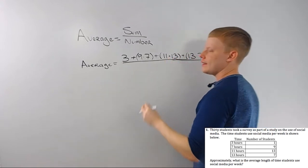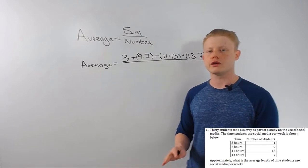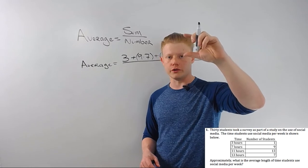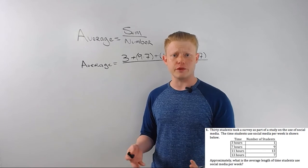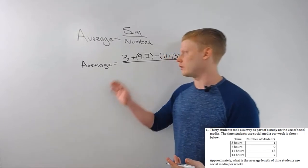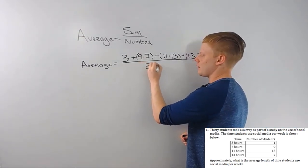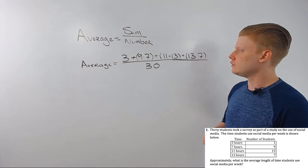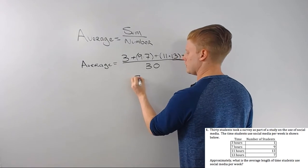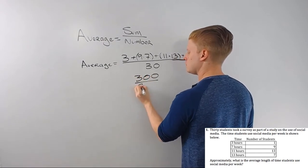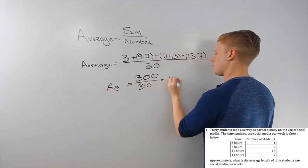Now, on these problems they're always going to give you the total number of students or whatever you're talking about. I really encourage you to find that — it's usually in the question or in the title of the table or graph. It saves time, and a lot of times people miss these because they've miscalculated the denominator. So just do the math, and you'll end up with 300 over 30.